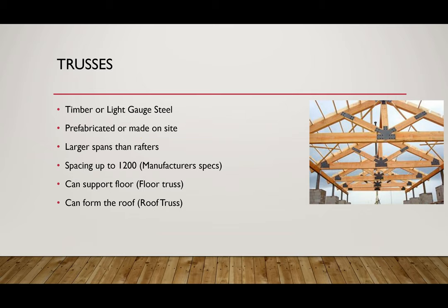You can use trusses — either timber or light gauge steel, depending on what kind of house you want. Most of you would have heard of companies like Superlok, which is light gauge steel framing for residential construction. These trusses can be made on site by a carpenter or prefabricated in a warehouse, transported by truck, and craned on top of the studs. Trusses allow us to get larger spans, and can be spaced up to 1200mm centres. There are two types: floor trusses for two-storey buildings, and roof trusses for the roof.